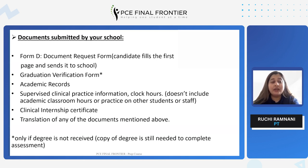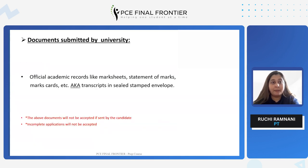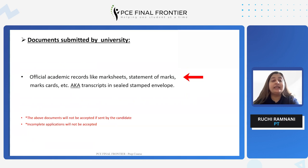As mentioned, you need the graduation verification form only if the degree has not yet been received. A copy of your degree is still needed to complete your assessment. Regarding documents submitted by the university — official academic records such as mark sheets, statement of marks, marks cards, or transcripts need to be submitted by the university in a sealed and stamped envelope sent directly to CAPR. If this document in particular is sent by your college or by you, it will not be accepted.